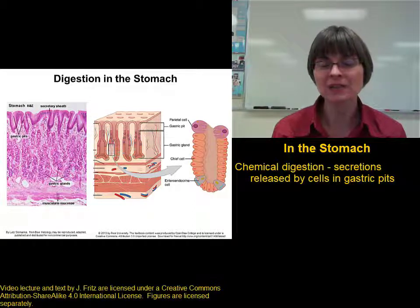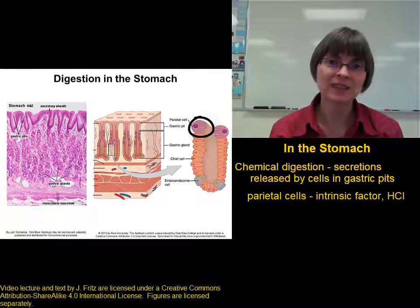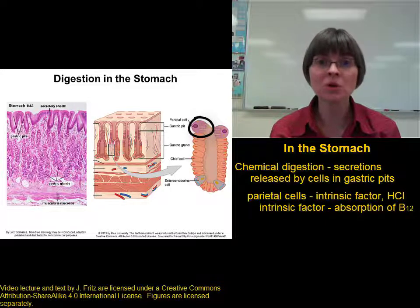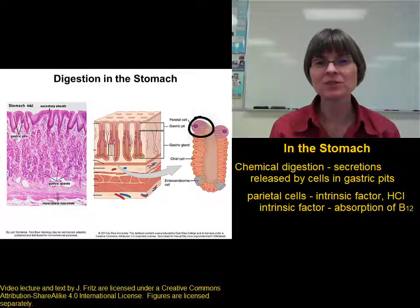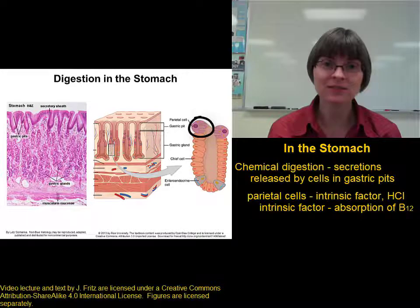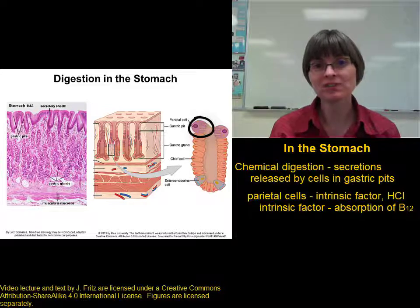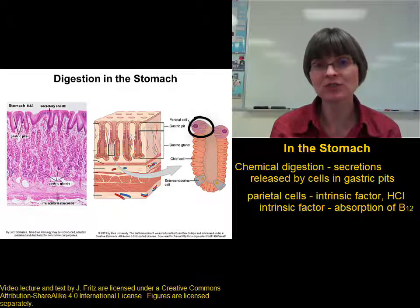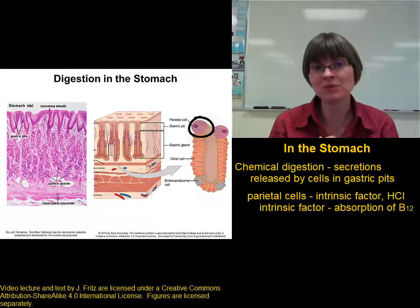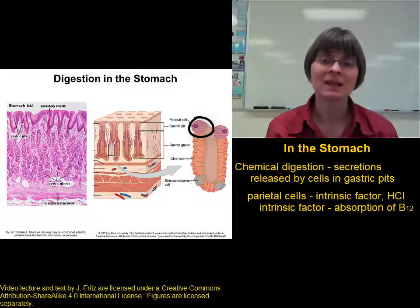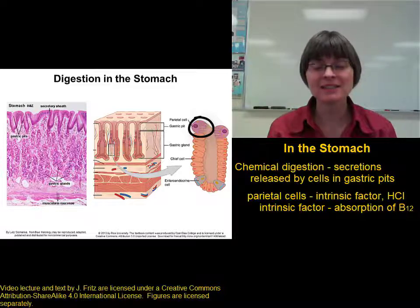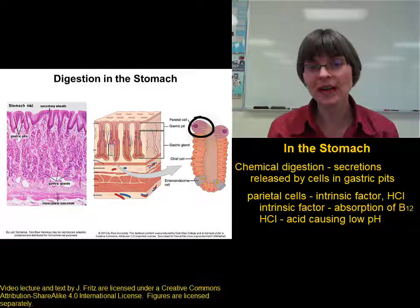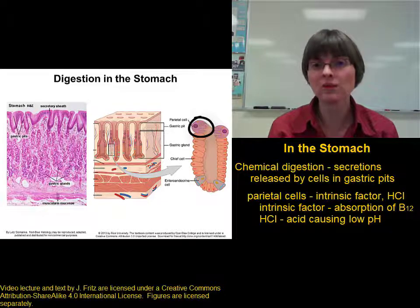We'll start by looking at the parietal cells. Parietal cells secrete two different things: intrinsic factor and hydrochloric acid. Intrinsic factor is important for absorbing vitamin B12. Vitamin B12 is too big to be transported easily from the digestive system into the bloodstream, but intrinsic factor solves this by binding to vitamin B12 and then binding to mucosal cells. Intrinsic factor triggers endocytosis of the vitamin B12, allowing it to be absorbed. The second secretion is HCl, or hydrochloric acid, which produces the incredibly low pH of the stomach — only one or two, which is very acidic.